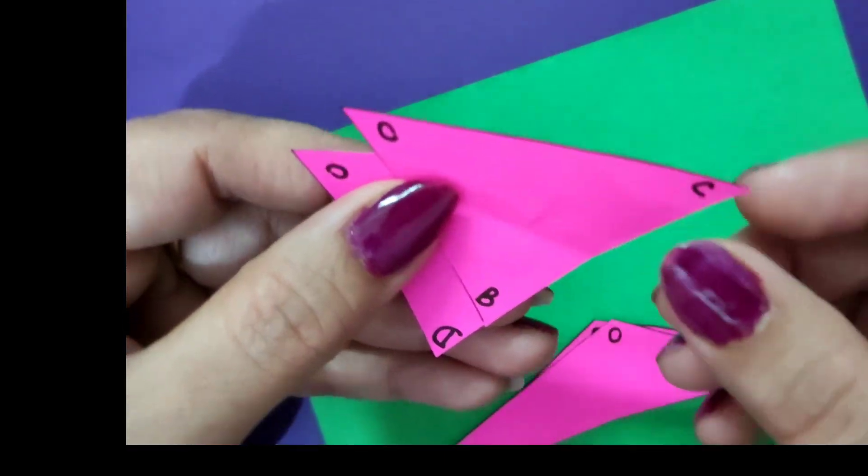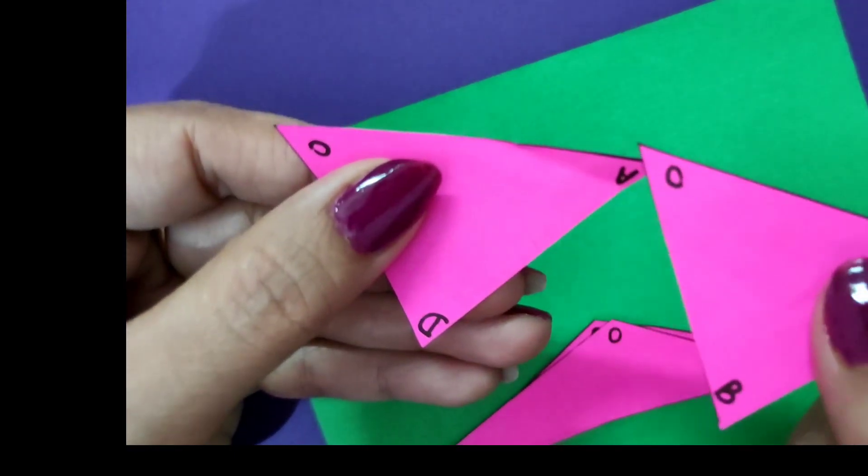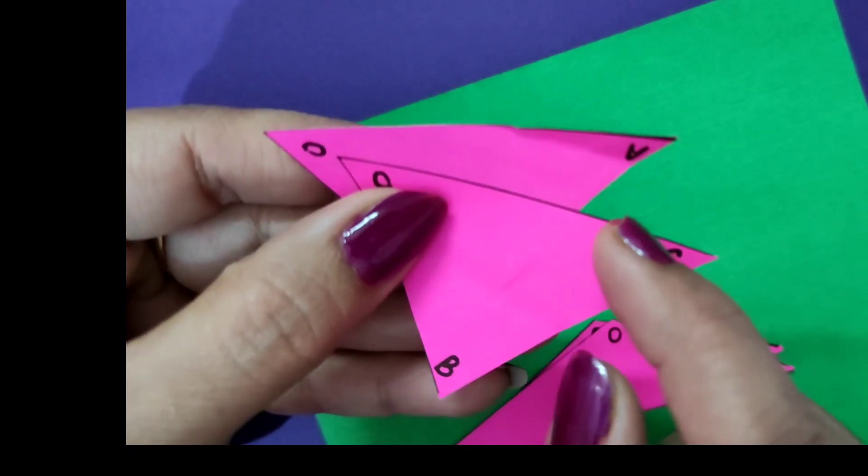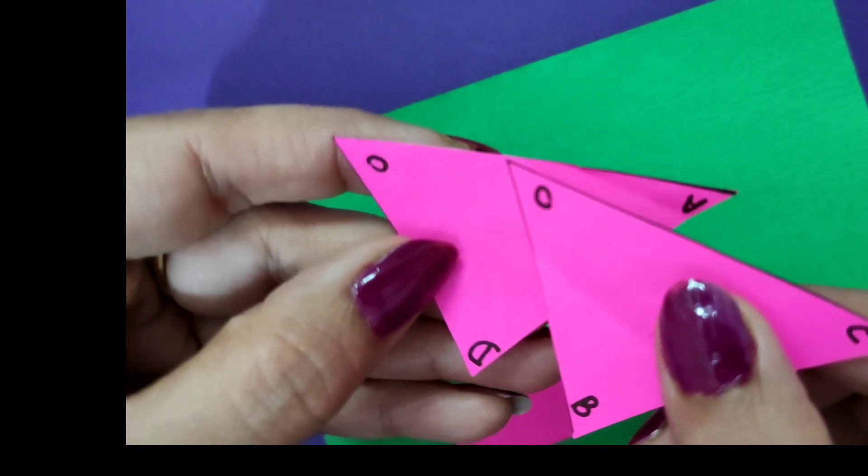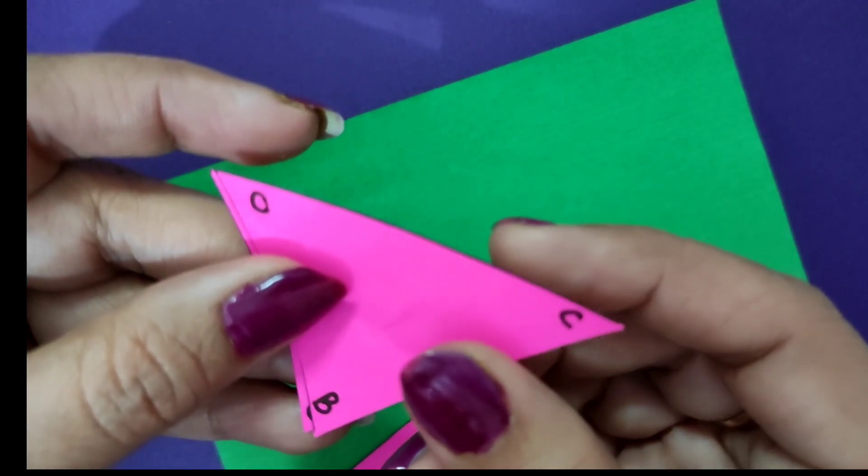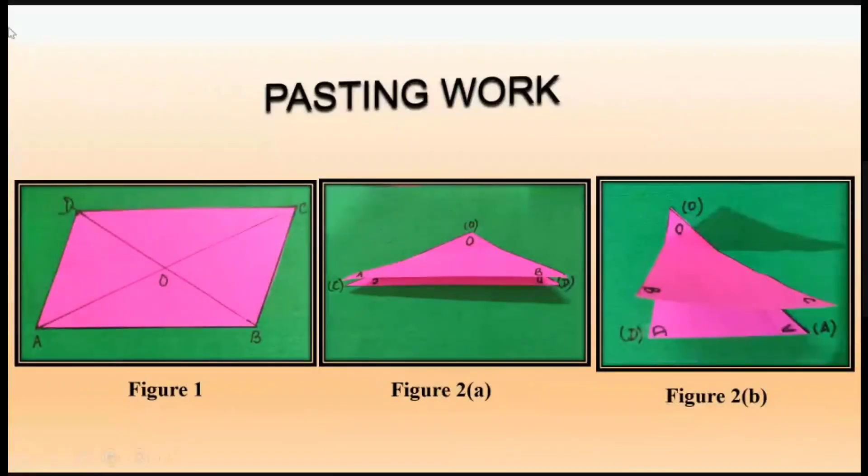They are completely covering each other. Exactly the same way, triangle COB is congruent to triangle AOD. That means AO is equal to CO and BO is equal to DO by CPCT in both cases. That means the diagonals bisect each other in a parallelogram.